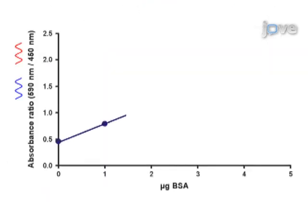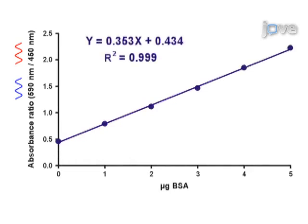The ratio of absorbance values at 590 nm and at 450 nm is strictly linear with protein quantity.